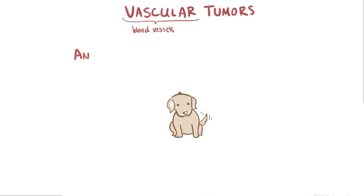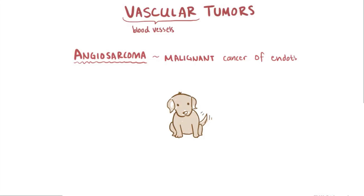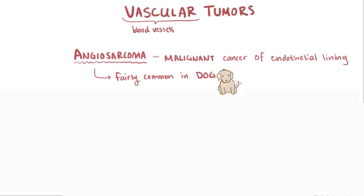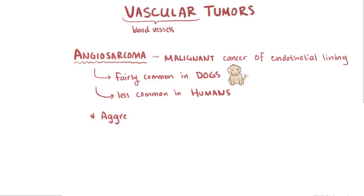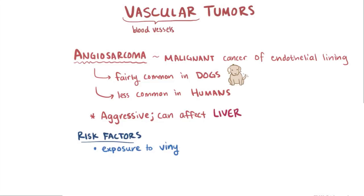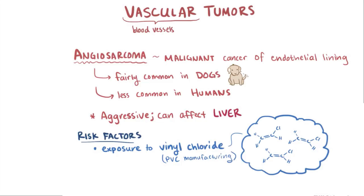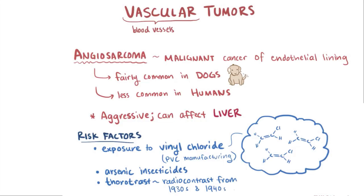Angiosarcoma is a malignant cancer, just like Kaposi sarcoma, and again involves the endothelial lining of the blood vessels. It's fairly common in large dogs, and less common in humans, but enough to still be aware of. Angiosarcomas are really aggressive and can affect the blood vessels in the liver. People who are frequently exposed to vinyl chloride monomer gas in PVC manufacturing are at risk of developing the disease, along with people exposed to arsenic insecticides and thorotrast, which is a radio contrast used during imaging procedures back in the 1930s and 40s.